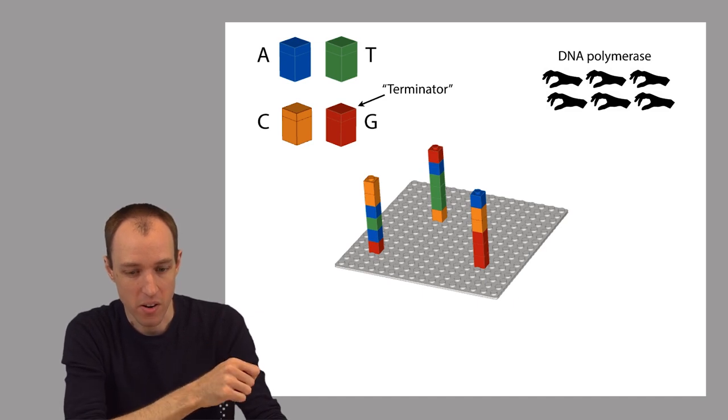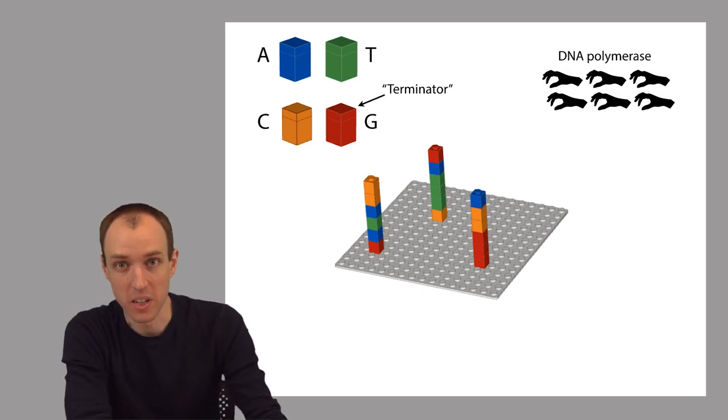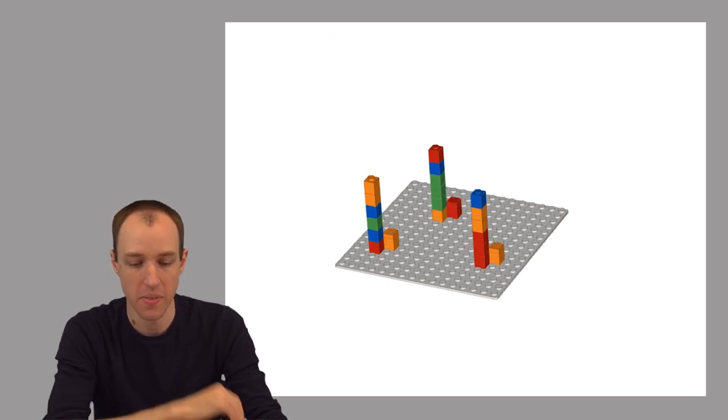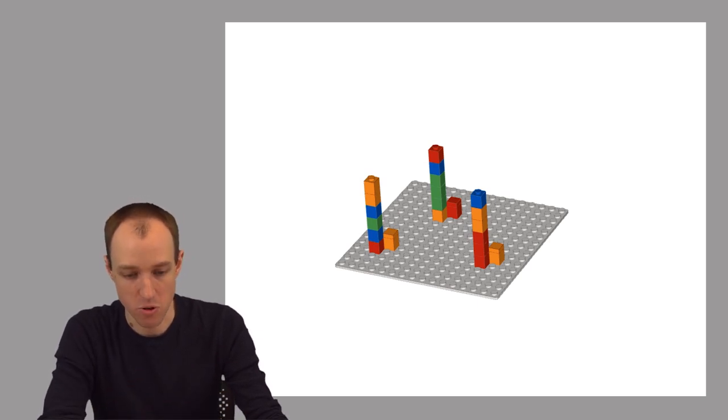So because of this terminator, when the polymerase goes to build the complementary strand, it will actually only add one complementary base for each of the templates, and then it will stop. Because of the terminator, it won't be able to add any more bases after the first one.